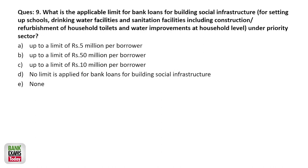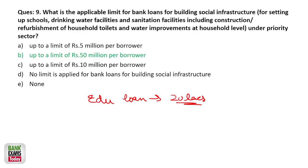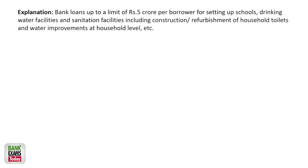What is the applicable limit for bank loans for building social infrastructure — setting up schools, drinking water facilities, and sanitation facilities under priority sector lending? For social infrastructure, the limit is 5 crore rupees per borrower. Also note, for education loans under PSL, the limit is 20 lakhs.